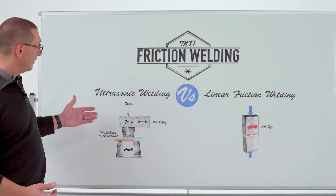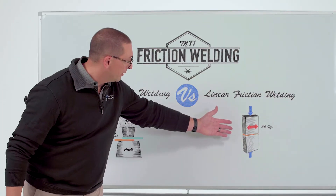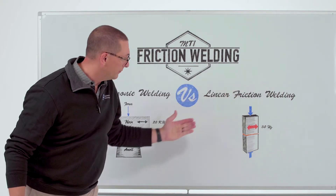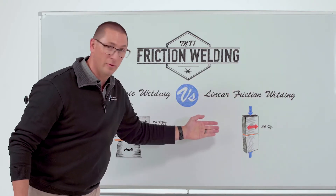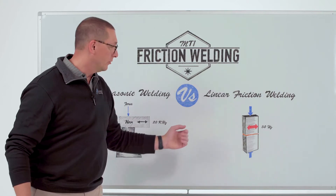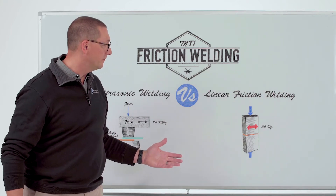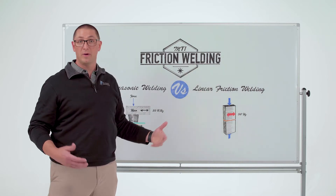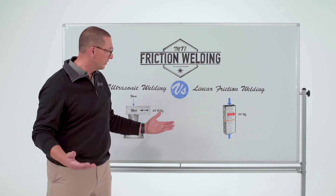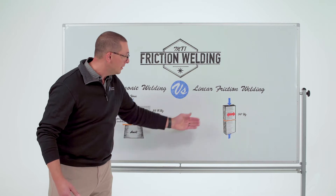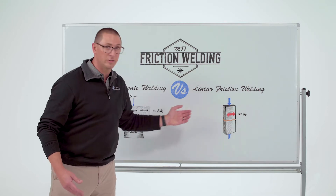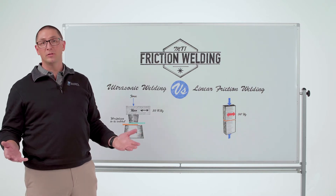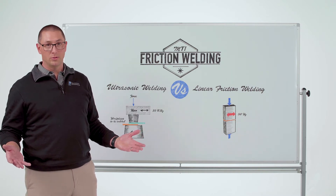In linear friction welding, shown over here to the right, we have a forged force that we're applying normal to the weld interface, and we're oscillating back and forth to get the relative motion in order to generate heat needed for forging. We're using a forged force measured in tons — tens of tons, even a hundred tons — and an oscillatory motion measured in hertz, let's say 50 hertz or a little bit less, with an amplitude in the millimeter range.